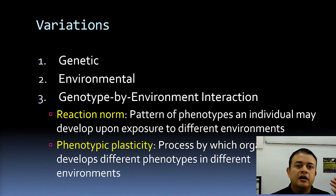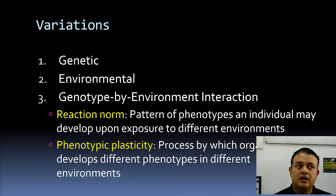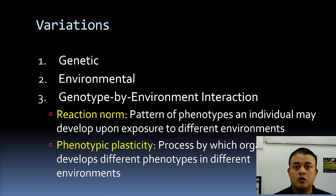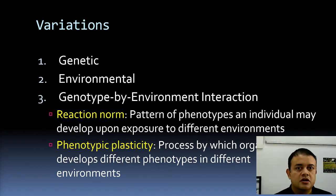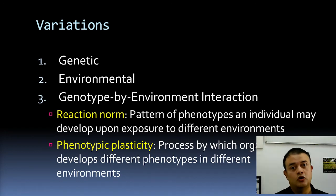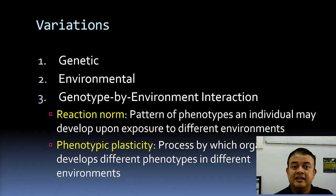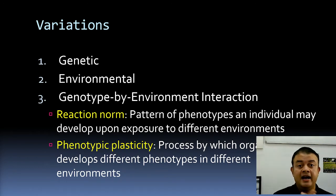Environmental variations are not heritable. The third type is genotype by environment interaction. The ability to tan differs between individuals — not everyone can tan. Even among white-skinned people exposed to sunlight, some turn red, some get blistery, and some turn the normal brownish tan. This response to the environment is determined partly by genotype, so you cannot predict that everyone's skin color will turn brown. That combined effect is what genotype by environment interaction is.